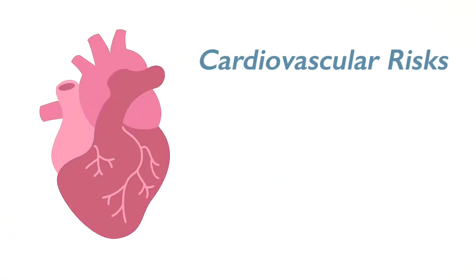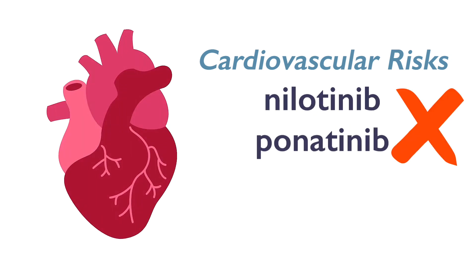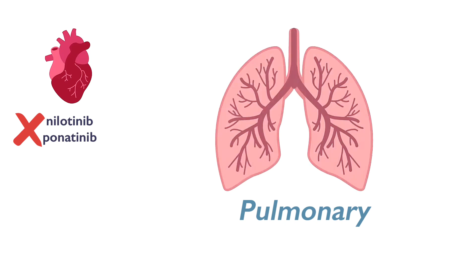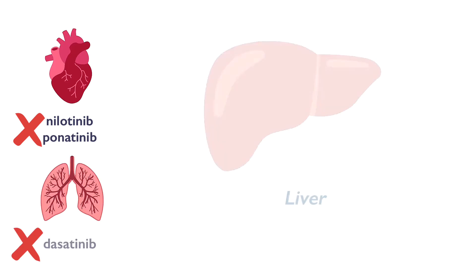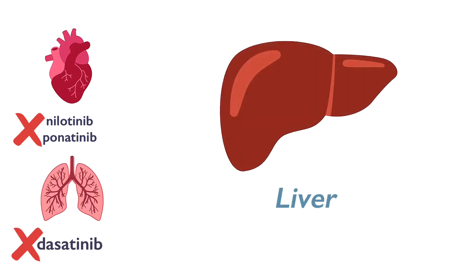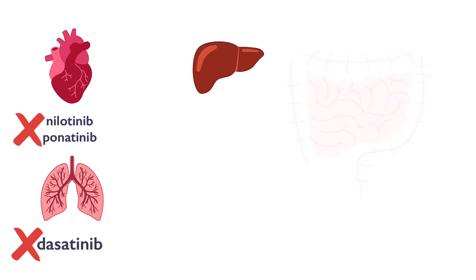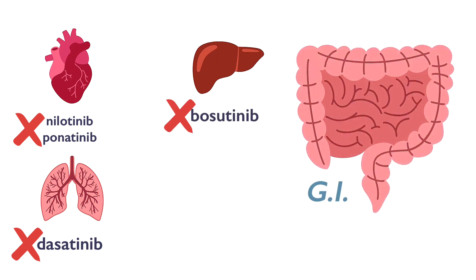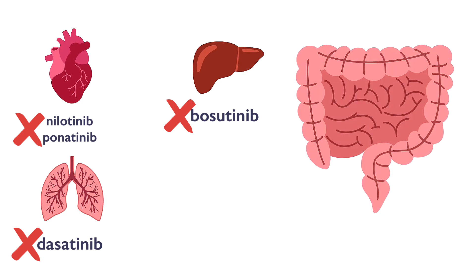If you have cardiovascular risk factors, avoid taking nilotinib or ponatinib. For pulmonary or lung issues, avoid taking dasatinib. If you have issues with liver function, avoid taking bosutinib. If you have chronic GI issues, avoid bosutinib — and imatinib may not be the best choice for you either.